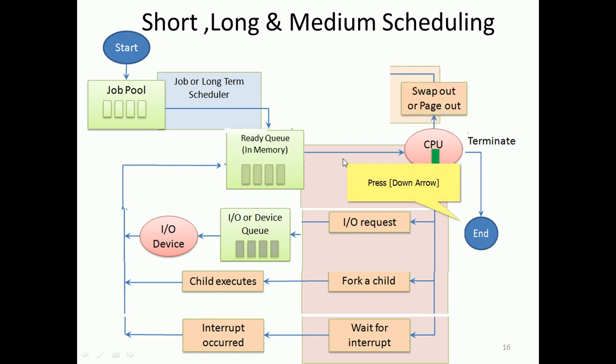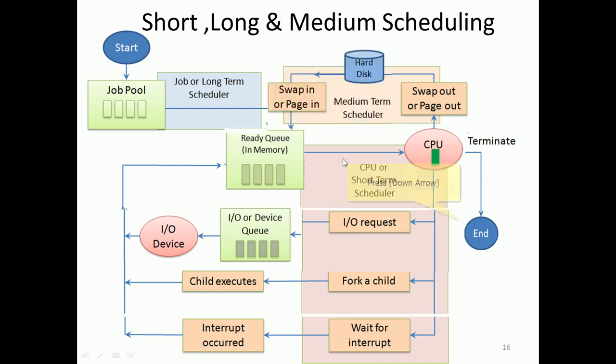To summarize the scheduling diagram: we can observe that swap out handles processor holdover due to non-arriving resources by temporarily suspending a process and placing it on disk. If a previously suspended process is available, it is brought back into the ready queue to execute. From this diagram we can clearly understand the different types of schedulers — short-term, long-term, and medium-term — and their respective time ranges.